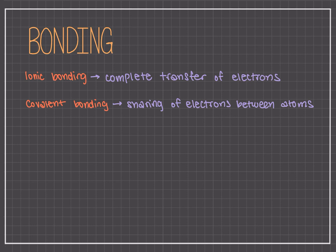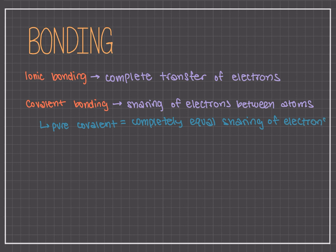Pure covalent bonding is when these electrons are completely and equally shared, whereas polar covalent bonding is when these electrons are unequally shared. The more strongly an atom attracts the electrons in its bonds, or the greater the electronegativity it has, the greater the atom will be pulling these electrons.